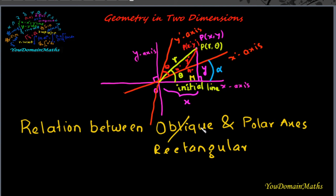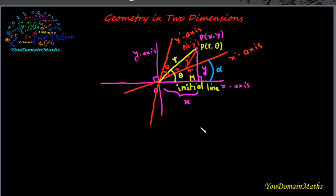Firstly, the rectangular axes: there are two lines, the x-axis and y-axis, intersecting at a point O and cutting mutually perpendicular to each other. In polar coordinates, the initial line is the same as the x-axis. The distance from O to point P is denoted by r, and the line OP makes an angle theta between the initial line and OP. So point P is denoted by (r, θ).